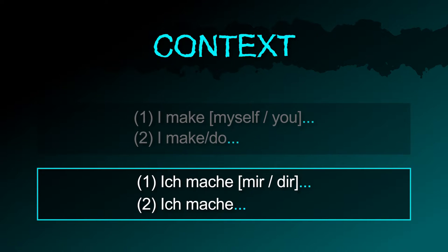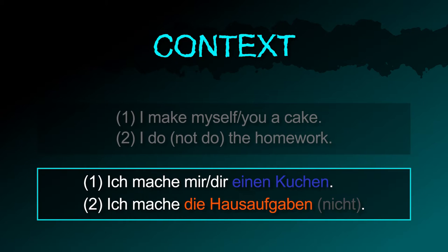Context: just add the noun to say what you are making, and add the right personal pronoun if you are making it for somebody. For example: ich mache dir einen Kuchen, ich mache die Hausaufgaben.